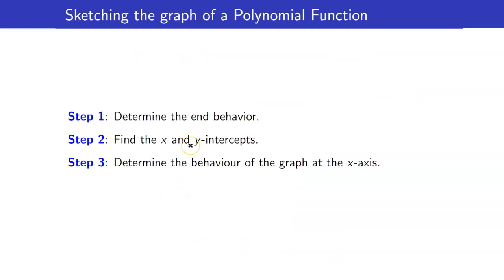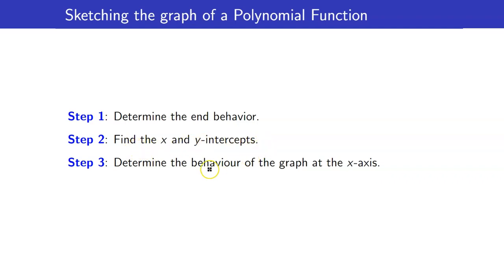We are now ready to sketch the graph of a polynomial function. First, we have to determine the end behavior — we did this in our last video lesson. Next, we need to find the x and y-intercepts. And lastly, we need to determine the behavior of the graph at the x-axis.